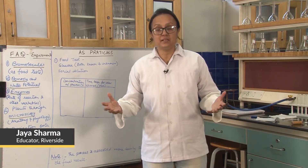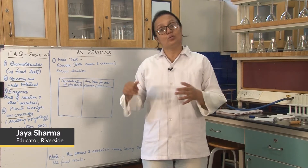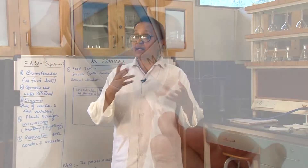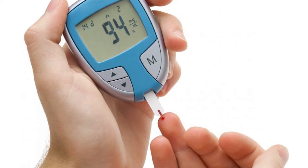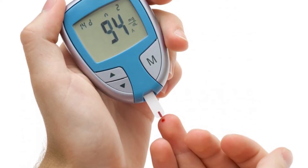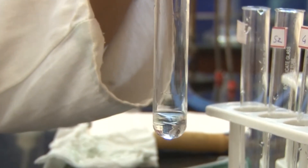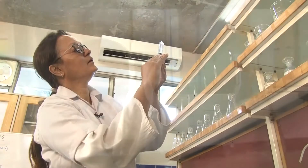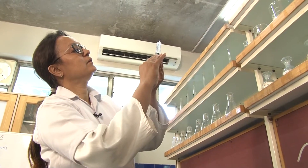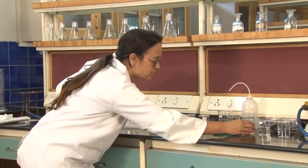Welcome to the AS Practicals Biology Laboratory. We study diabetes and know that glucose is tested in urine. To determine who has what degree of diabetes, we detect the level of glucose. In this experiment, we need to find out what concentration of glucose is present in order to test unknown samples.